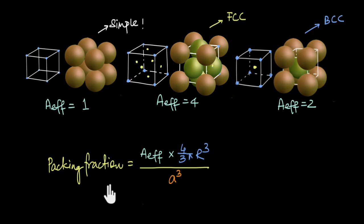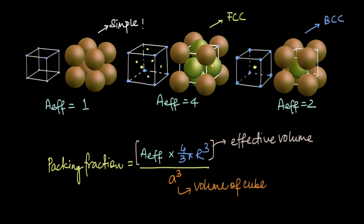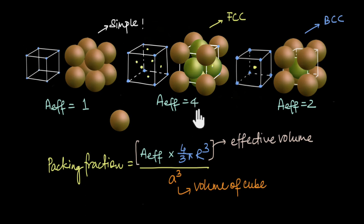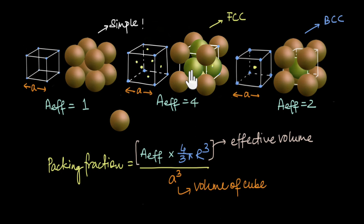To summarize, the packing fraction equals the effective volume of atoms inside the unit cell divided by the volume of the cube. However, we cannot simply compare the three unit cells by A_effective alone, because the edge length a is not the same in all three cases. In simple cubic, corner atoms touch each other along the edge, but in FCC and BCC, corner atoms do not touch each other.